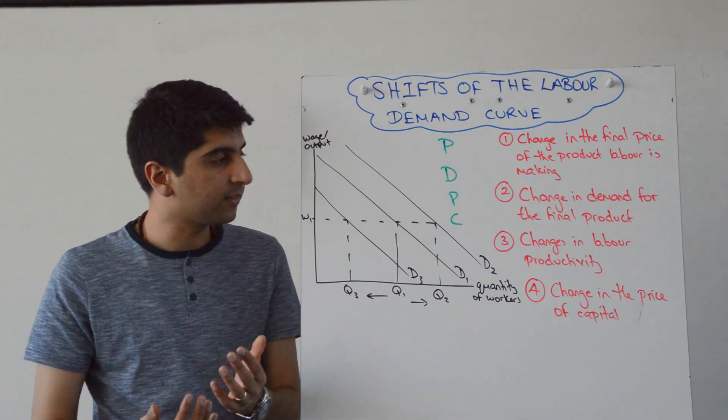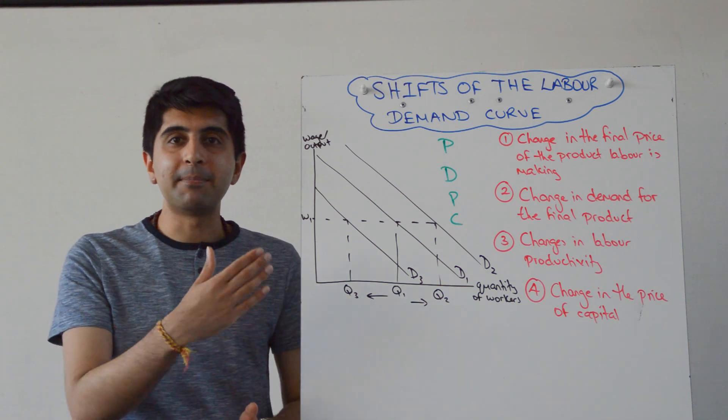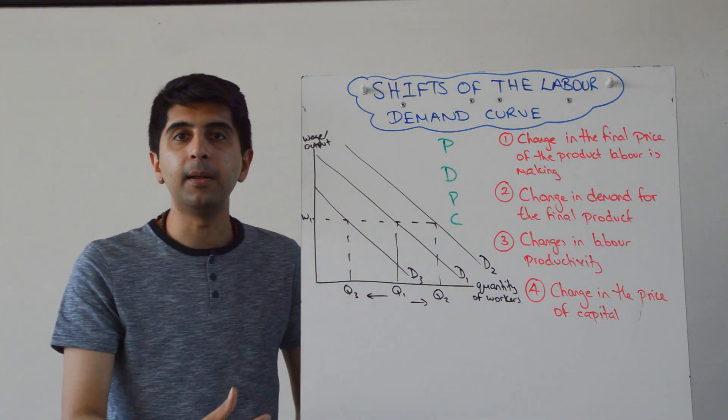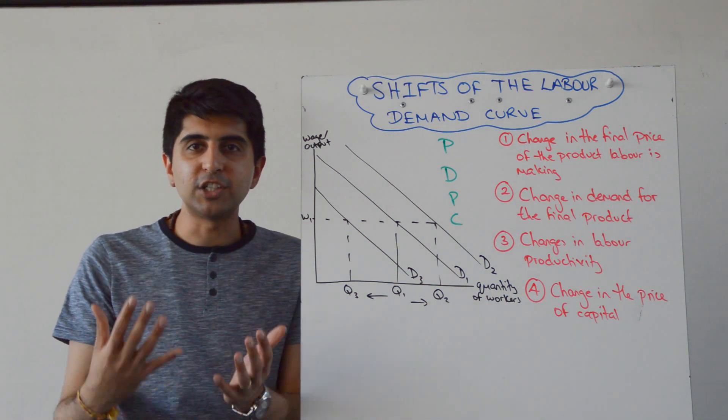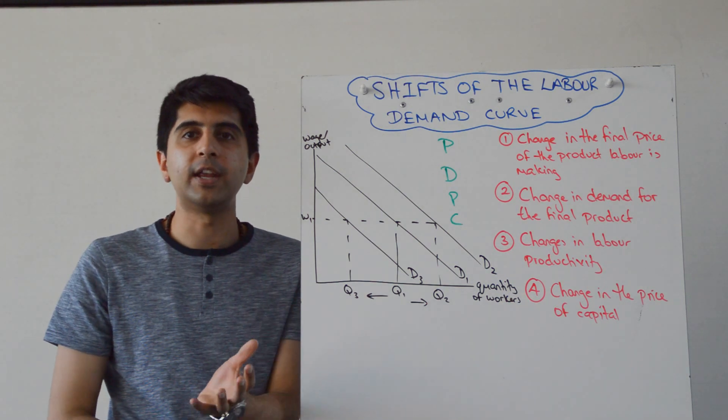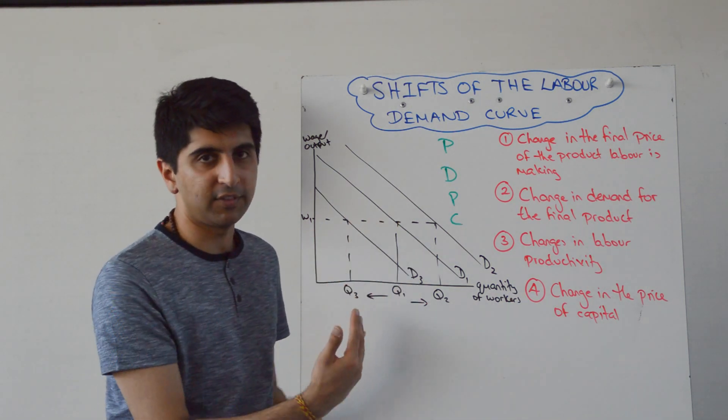So if the price of capital goes down, then maybe the demand for labour will decrease. Think of it in terms of the price of a substitute here, the price of capital. So if the price of capital goes down, it's much cheaper for firms to use machinery as long as that capital machinery is substitutable for labour. Therefore, the demand for labour will shift to the left.